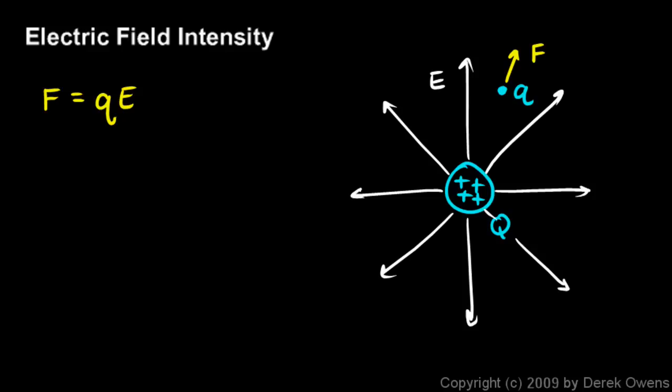But we also have another equation that we've already learned, and that equation tells us the force between two charges. So if we have this big charge Q and this small charge little q, we can use Coulomb's law to talk about the force between them. And the force is k times big Q times little q over r squared, where r is the distance from one charge to the other.